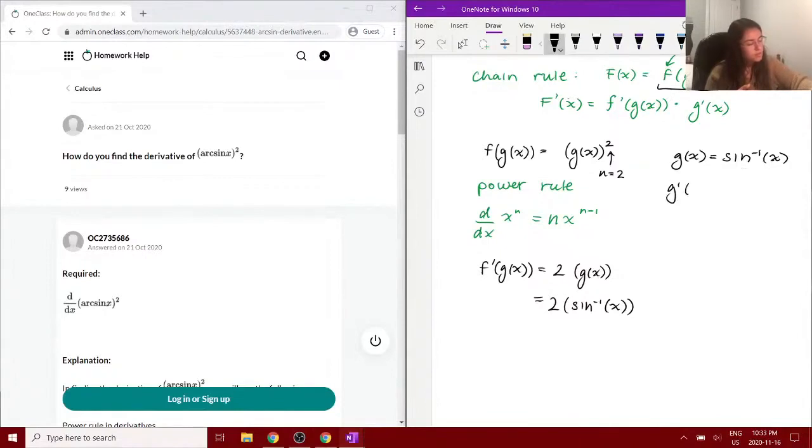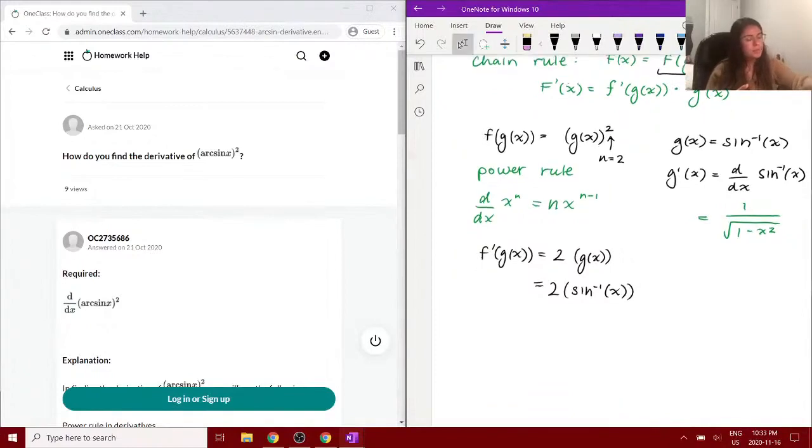So working on this part now, remember we want the derivative of g of x. The derivative of g of x is the derivative of the inverse sine function. And from reference, we know that the derivative of inverse sine is equal to 1 over the square root of 1 minus x squared. This might be something that you could look up or that you would have to maybe derive on an exam or memorize. But that's a known solution.